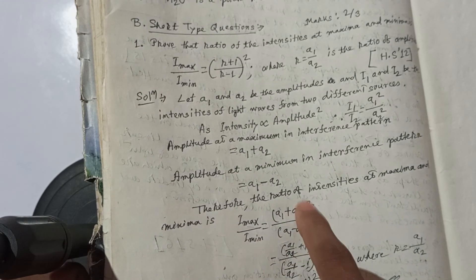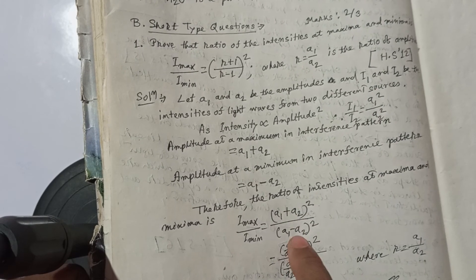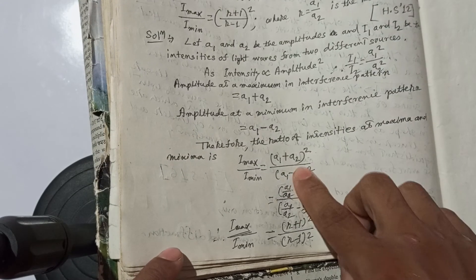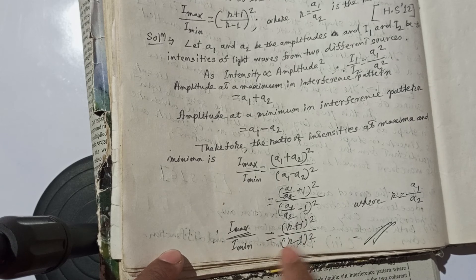If R is equal to A1 by A2, then the ratio equals R plus 1 whole square by R minus 1 whole square.